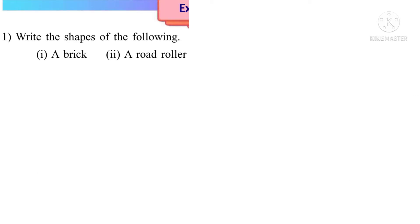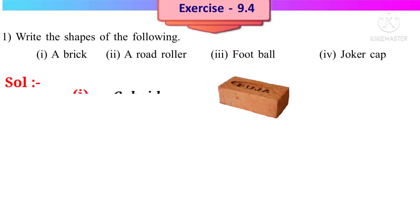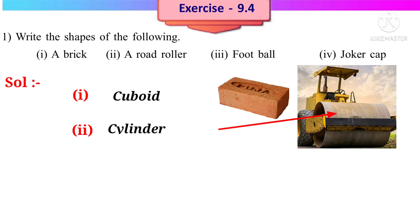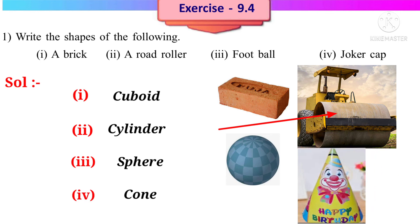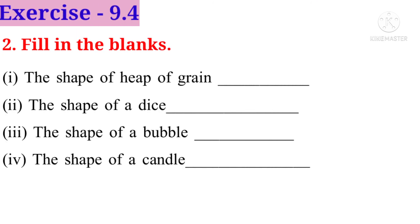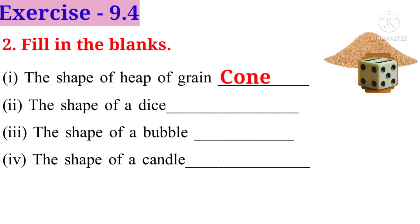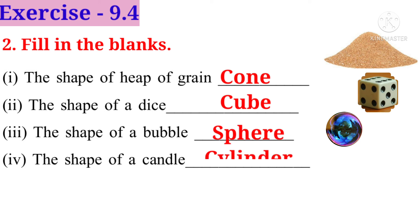Now let us take Exercise 9.4. Problem 1: Write the shapes of the following. Number one — a brick is in the shape of a cuboid. Number two — a road roller is in the shape of a cylinder. Number three — a football is in the shape of a sphere. Number four — a joker cap is in the shape of a cone. Problem 2, fill in the blanks: a heap of grain is cone-shaped, a dice is cube-shaped, and a bubble is sphere-shaped.